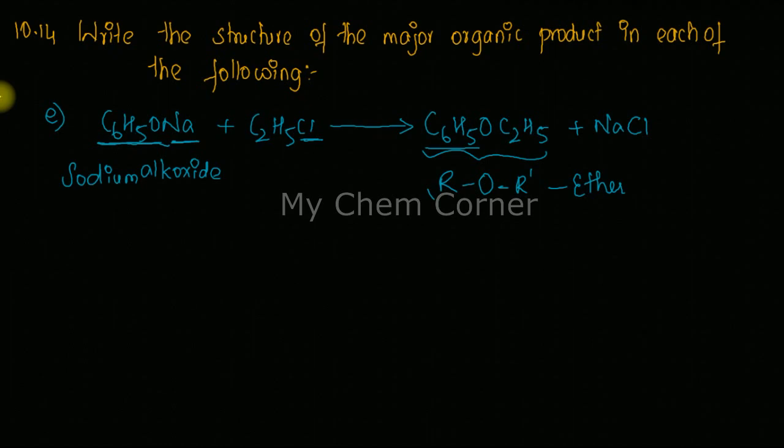So throughout your syllabus, there's only one method that you try to prepare an ether, and that reaction is called as Williamson's ether synthesis. So now this is a name reaction, Williamson's ether synthesis, which is going to be an application or a chemical property of an alkyl halide where you use an alkoxide and you form an ether. So this is the Williamson's ether synthesis.